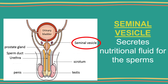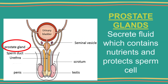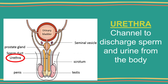The seminal vesicle secretes nutritional fluid that helps the sperm to swim. Meanwhile, the prostate gland secretes semen, a fluid containing sperms, and provides nutrients for the sperms.